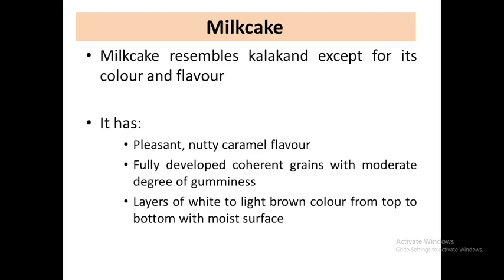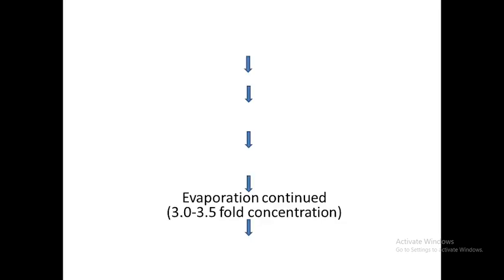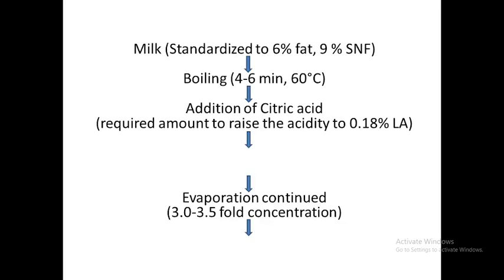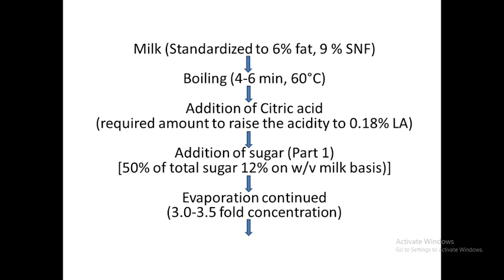Milk cake is similar to kalakand; however, the difference is that milk cake has different shades — as you go from one point to another, the color intensity changes. On one side it is white while the other side will be dark brown. This layering of white to light brown color from top to bottom with a moist surface is the characteristic feature of milk cake.